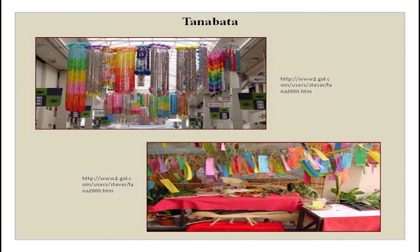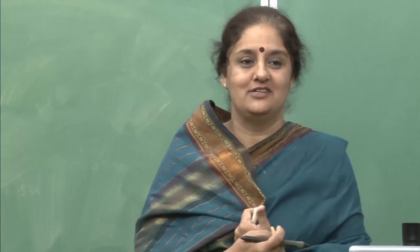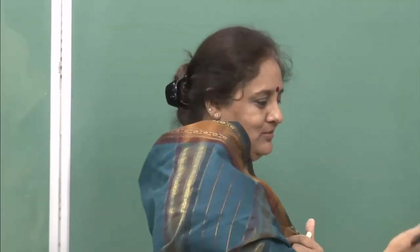This is about Tanabata. You can read more on the net — the pictures are all from Google so you can look them up. All the links are given. You can see the different versions of the legend — different places have different endings, different ways Tentei treated his daughter Orihime, how the magpies helped her. Learn more about Tanabata.